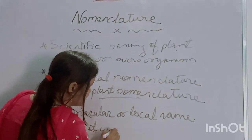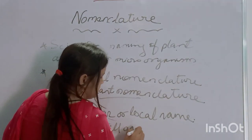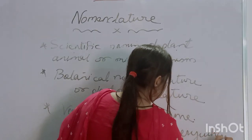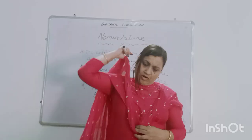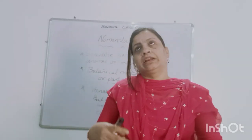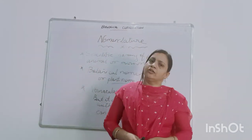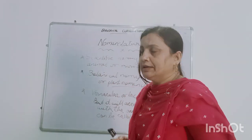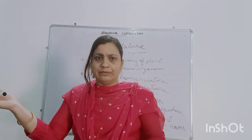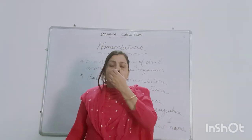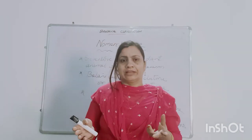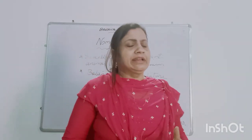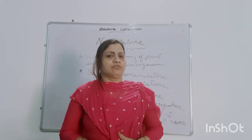But local names will not be accepted everywhere. Now, nomenclature can be polynomial, trinomial, or binomial, but the most accepted one is binomial nomenclature. In binomial nomenclature, two names are given: one is called the generic name, derived from genus, and the other is called the specific name, derived from species.